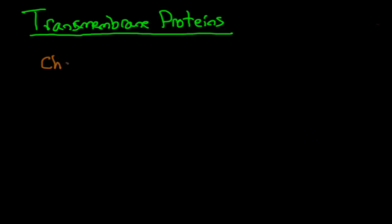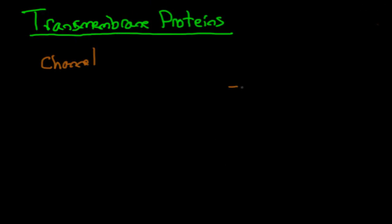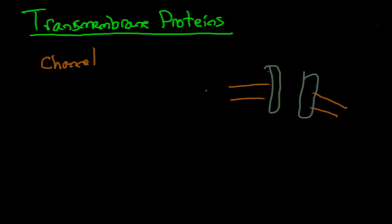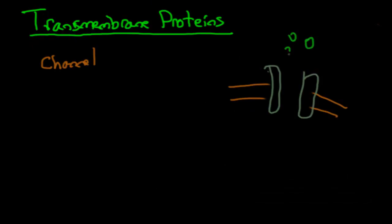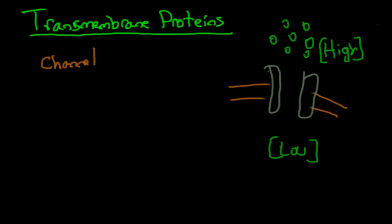So let's talk about the channel proteins. Generally speaking, these ones do not use any energy — they don't use ATP. This would be a channel protein right here. It serves the purpose of allowing solutes to pass down their concentration gradient. So let's say we had a solute with a high concentration on one side; it would move down this channel protein to the area of low concentration.